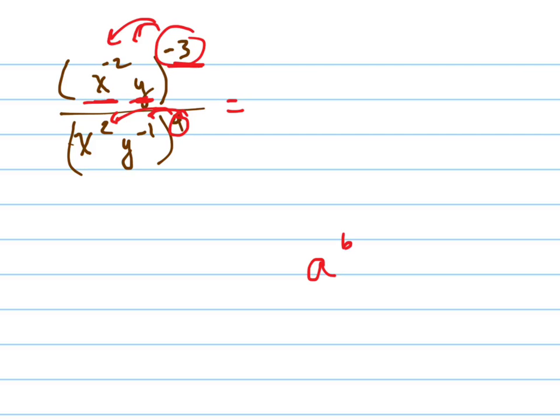When you're raising a power to a power, you multiply the exponents together. It's a to the bc. That's your formula.